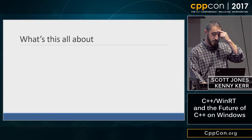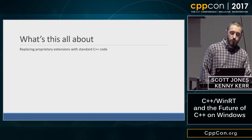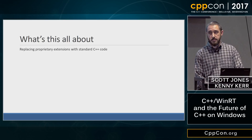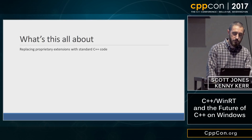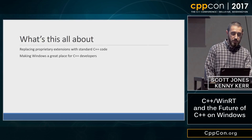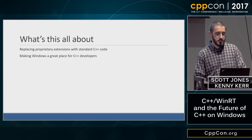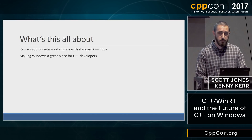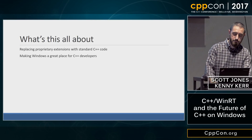What is this talk about specifically? One of the things we're doing is replacing proprietary extensions with standard C++ code — we'll talk about what that means practically. We also want to make Windows a great place for C++ developers, because for a long time it seemed as if Windows didn't really care that much, and we want to make sure that changes.